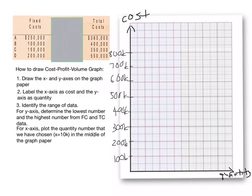For x axis, plot the quantity number that we have chosen x equal to 10k in the middle of the graph paper around here. And make sure do not plot the number more than half graph because we need this area for the line intercept.